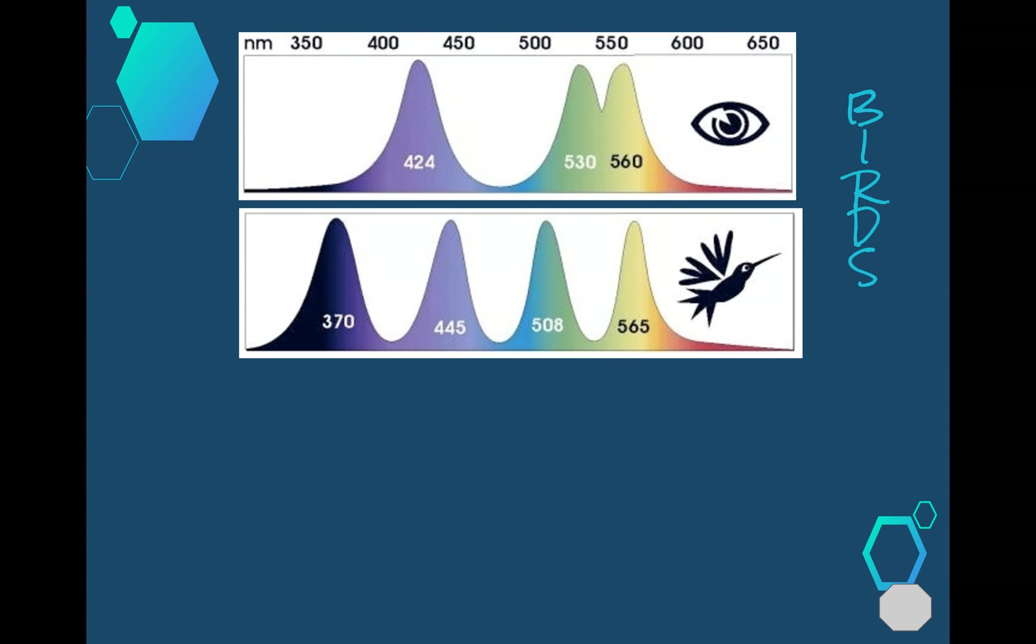Unlike humans, most bird species are able to detect light well into the ultraviolet range of the spectrum. In addition to this, birds tend to be able to detect light most efficiently in the red or longer wavelengths and green ranges of the spectrum.